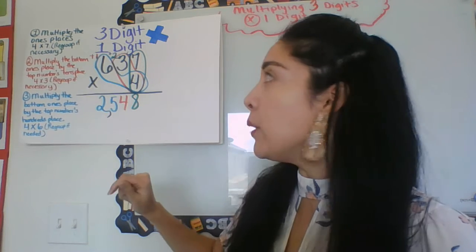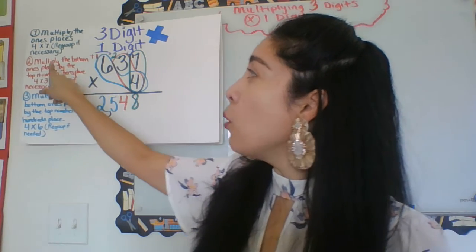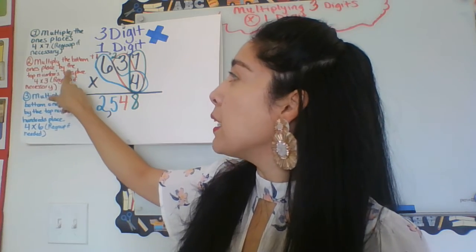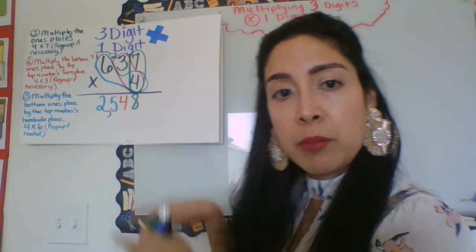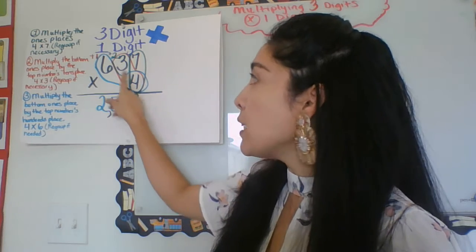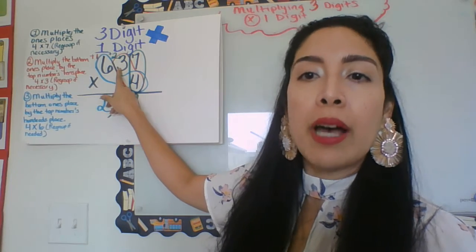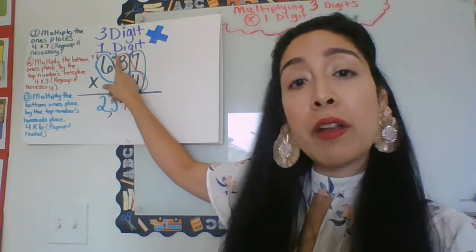Okay, continuing on, now I multiply the bottom ones place by the top tens place, so that's bottom to side, right? So four times three is 12, plus two more that I regrouped, equals 14.